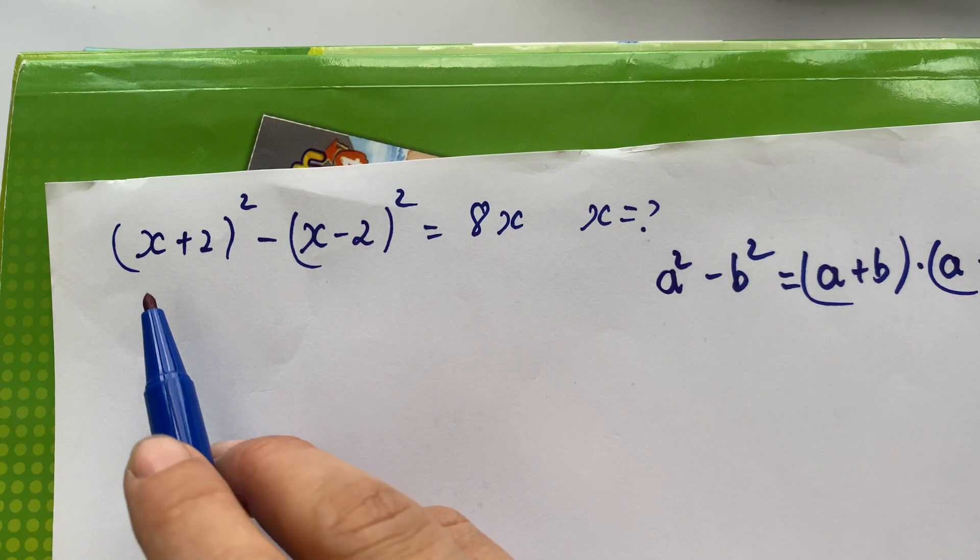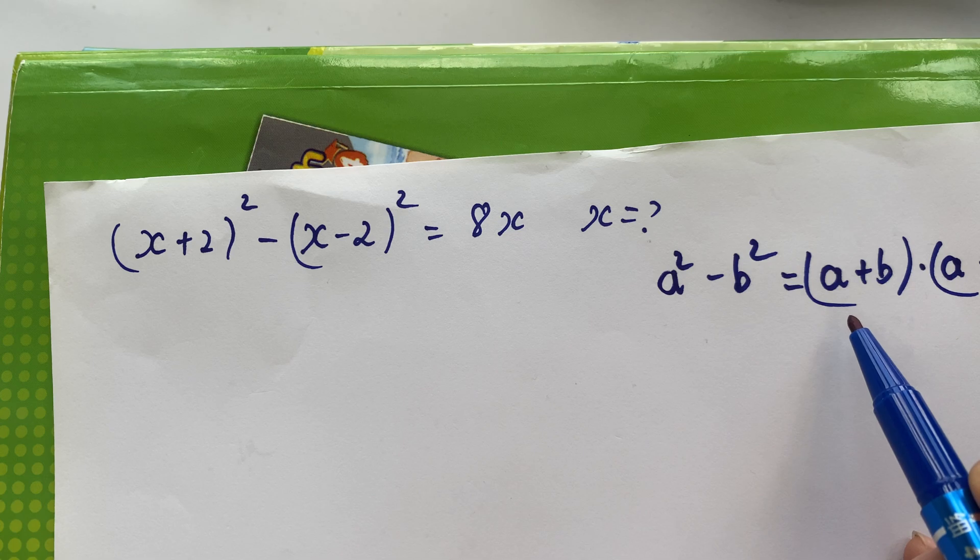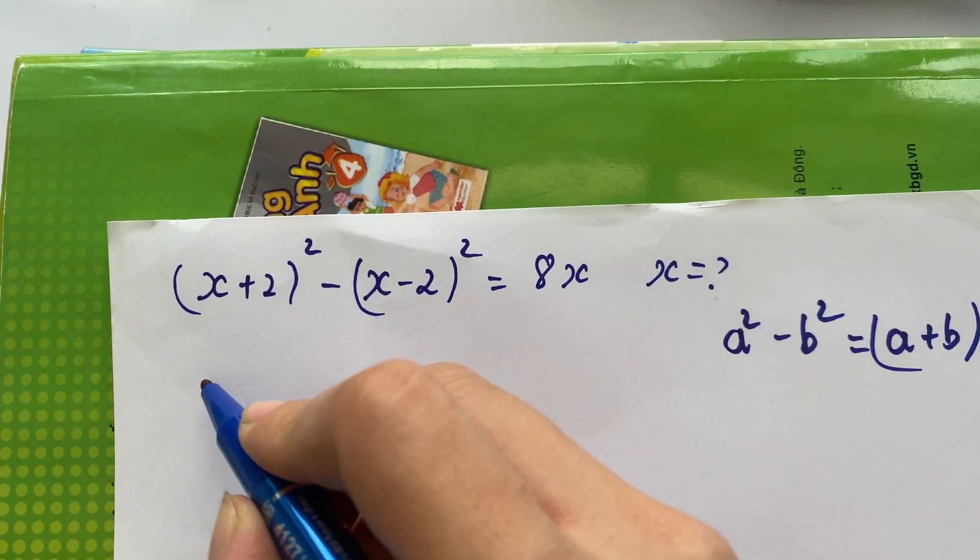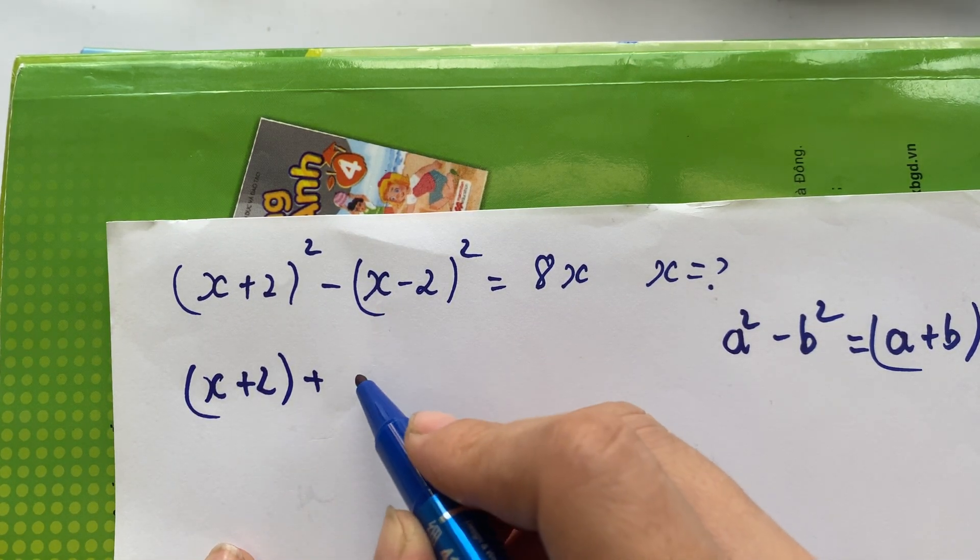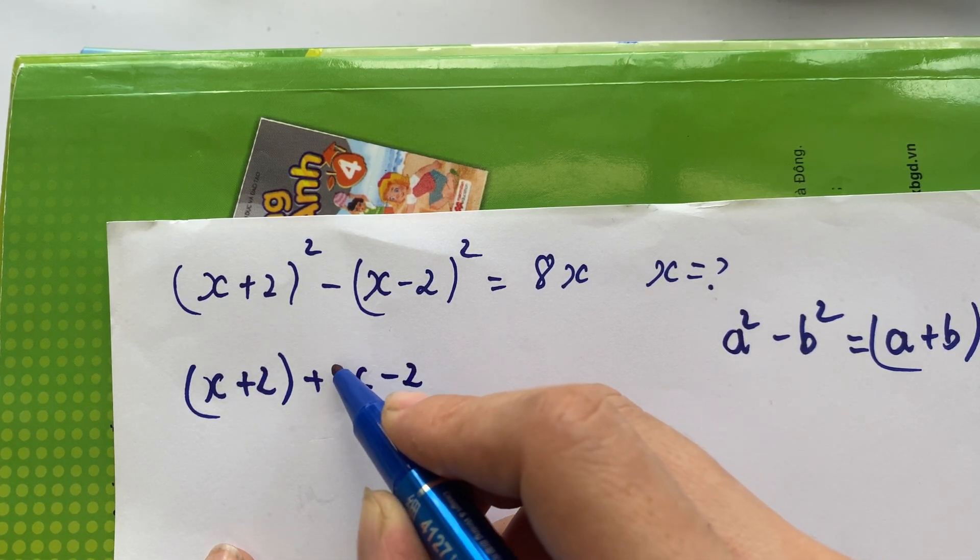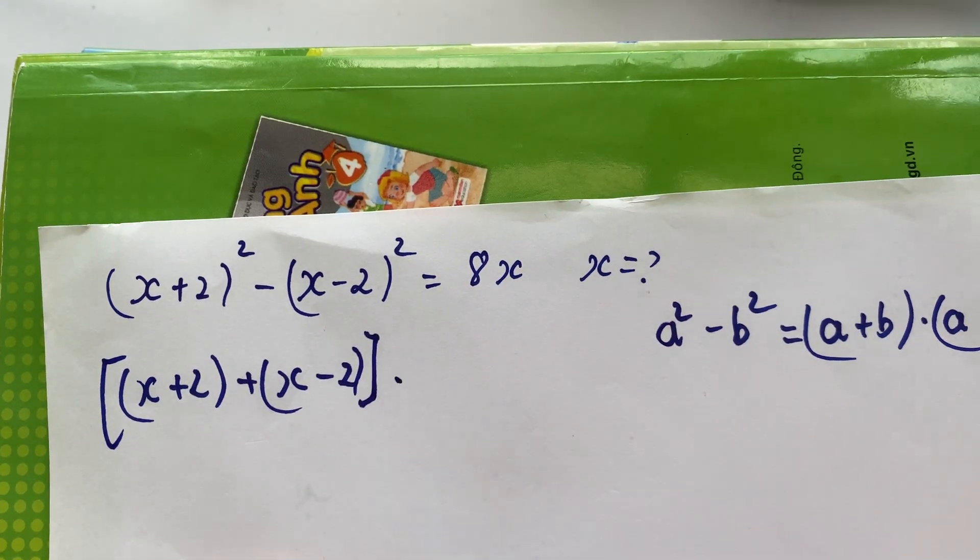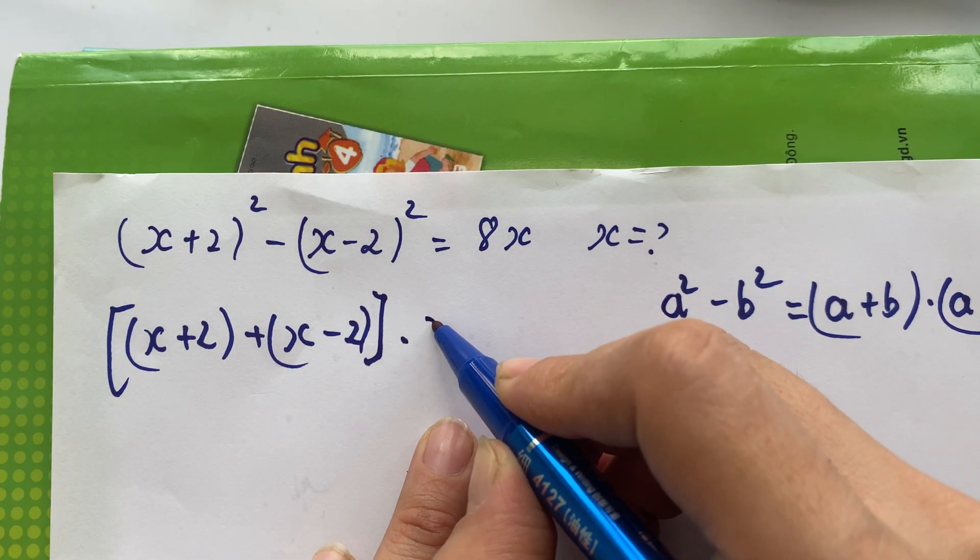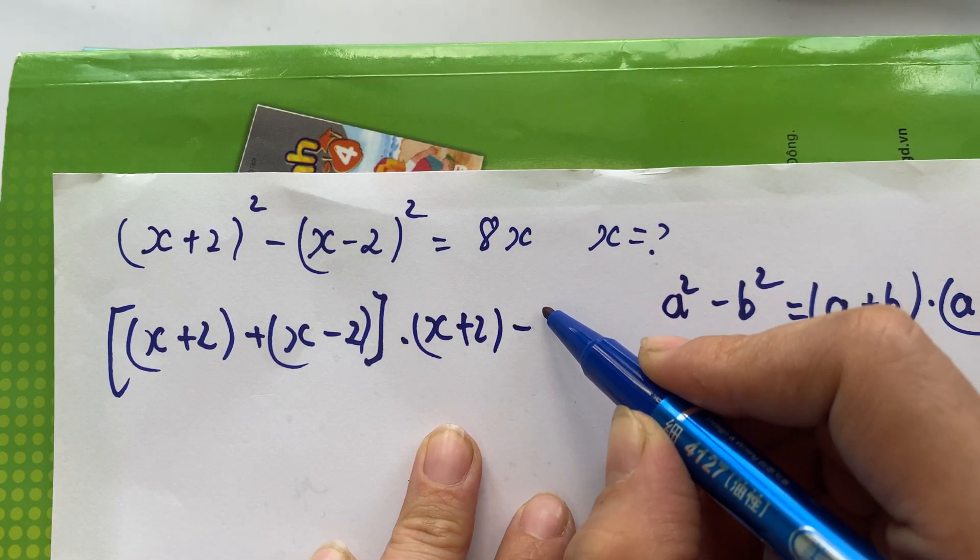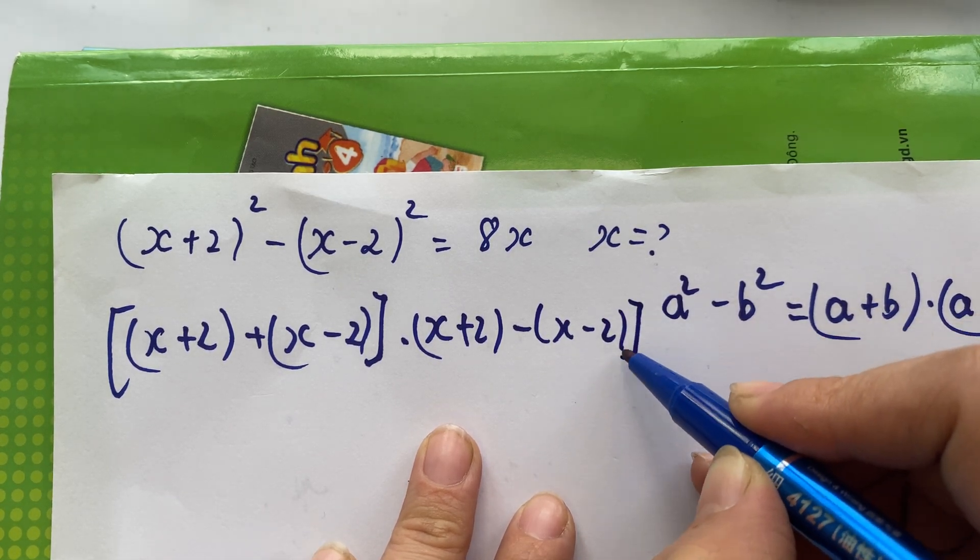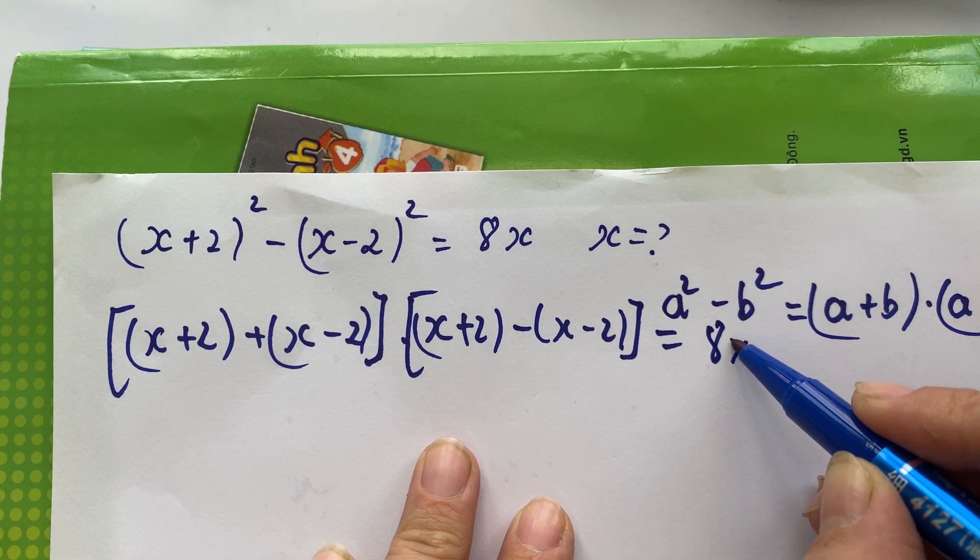So for a² minus b², you can use (x+2) plus (x-2) in one bracket, times (x+2) minus (x-2) in another bracket, which equals 8x.